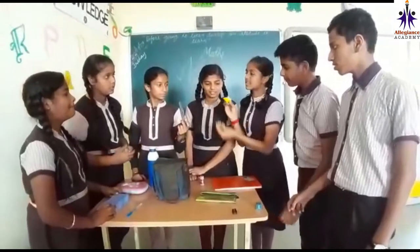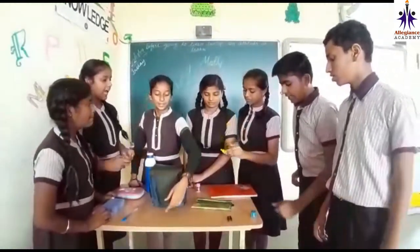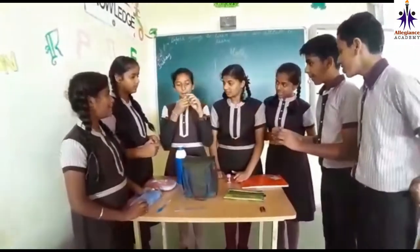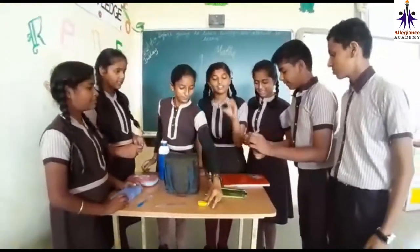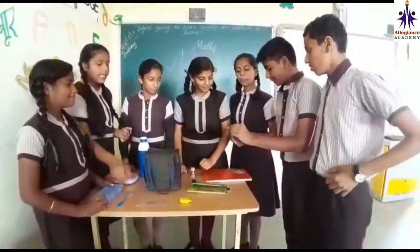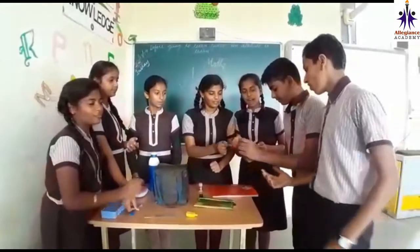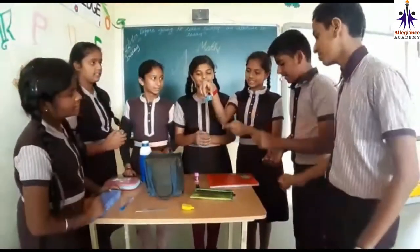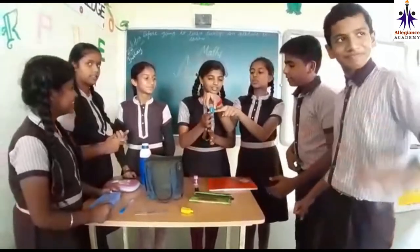But it has the second shape which is a cylinder. It is a cube. If we see only this part, it looks like a cylinder. This is also a cuboid. It has 12 edges.